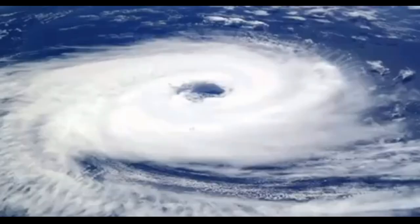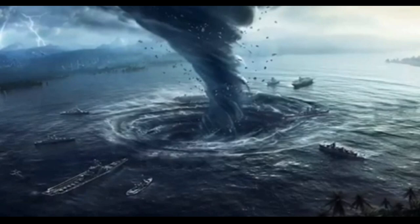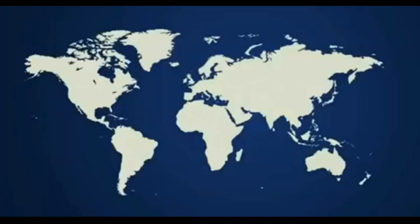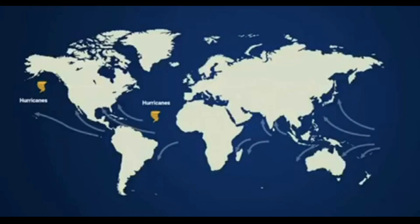Tropical cyclone is the general term used to refer to a rapidly rotating storm system formed in the tropical regions of the world. It has different names depending on where the storm is formed. Hurricane when it is formed at the North Atlantic Ocean. Typhoon is the name used when the storm is formed in the Western Pacific Basin. Across Australia and the Indian Ocean region, they are referred to as cyclones.